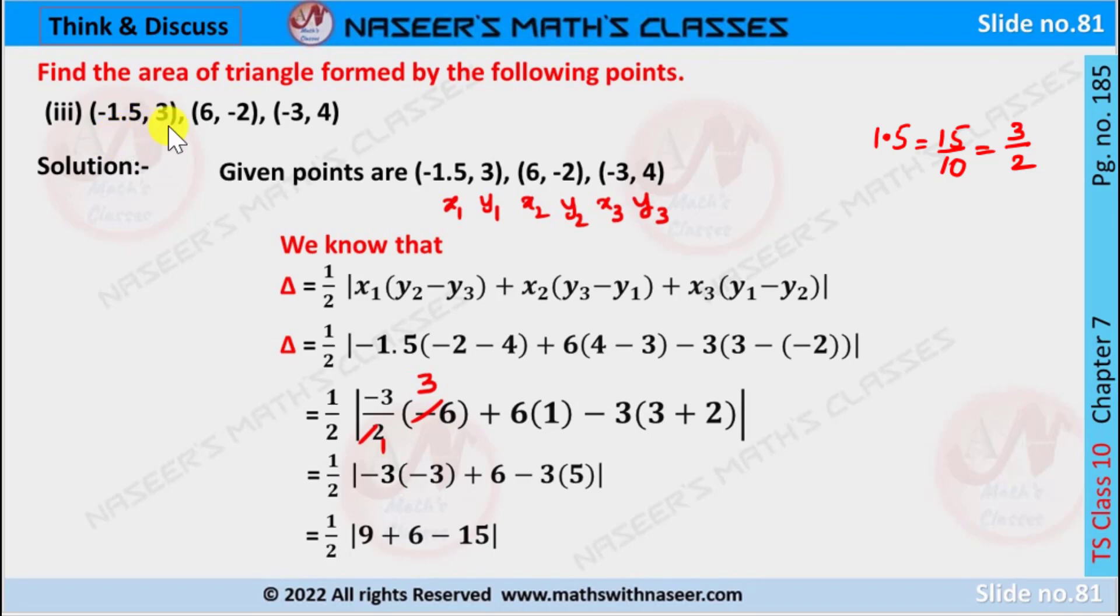The given points are minus 1.5 comma 3, 6 comma minus 2, and minus 3 comma 4.